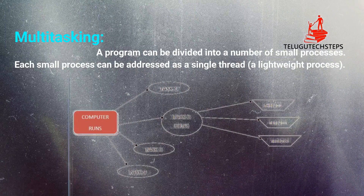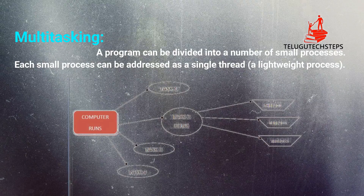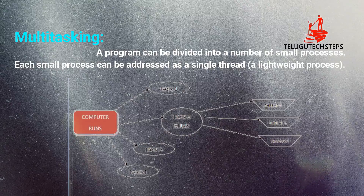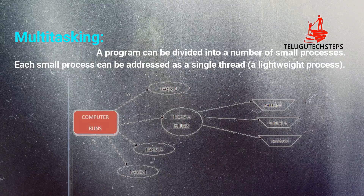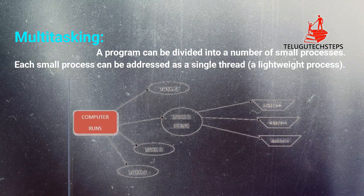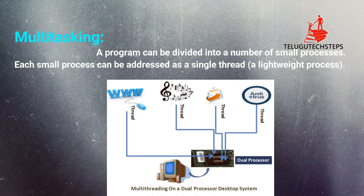I will divide the task into parts. For example, I have a huge program A. I will split that program A into parts B, C, and D. A separate process executes B, a second process executes C, and a third process executes D. This process is a lightweight processor, and a lightweight processor is nothing but a thread.